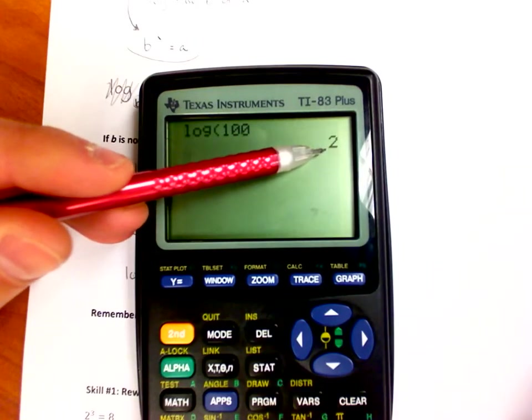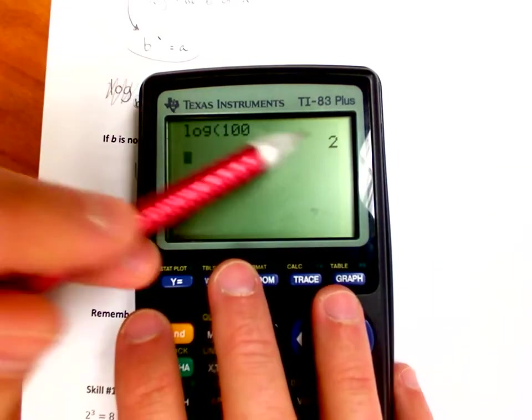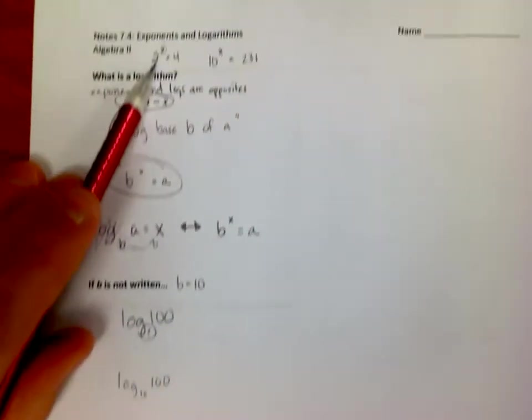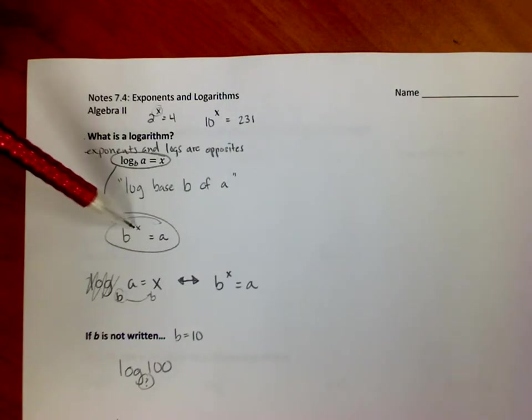It says 10 is the subscript raised to what power gives me 100. 10 to the second power gives me 100. So it's a way you'll notice to get out, it separates out and it gets the exponent by itself.